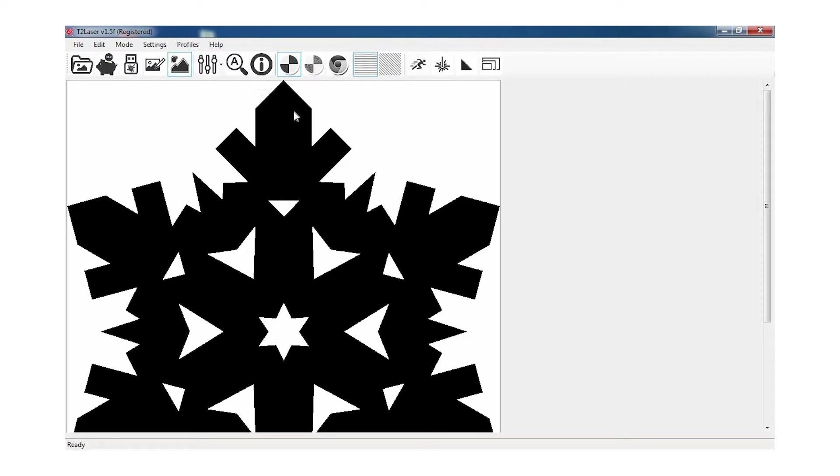Then I'm going to use the trace feature just to trace out the outside of the snowflake and all the little inside triangle and star bits.